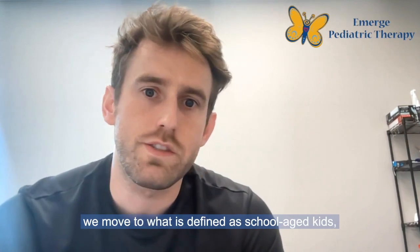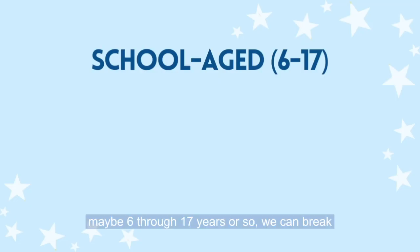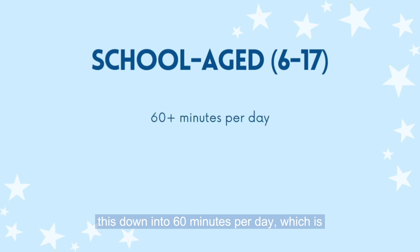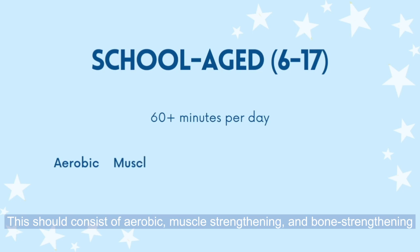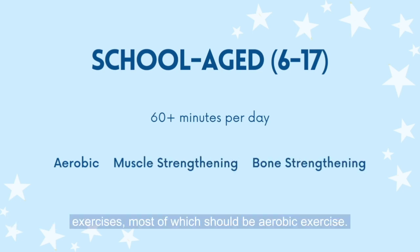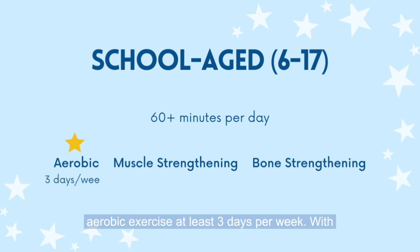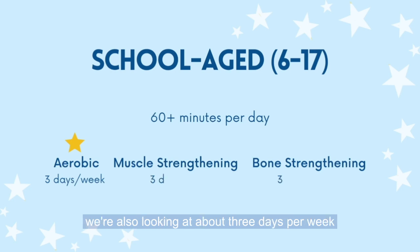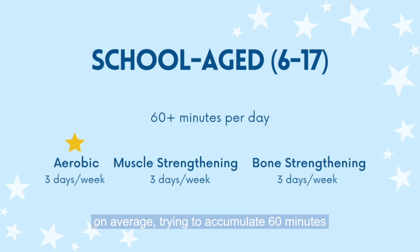When we move to school-aged kids, maybe six through seventeen years or so, we can break this down into 60 minutes per day — 420 minutes total per week. This should consist of aerobic, muscle strengthening, and bone strengthening exercises, most of which should be aerobic exercise. This should be moderate on average, with vigorous aerobic exercise at least three days per week. Muscle strengthening and bone strengthening should also occur about three days per week.